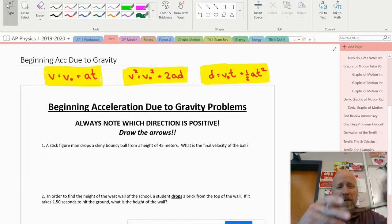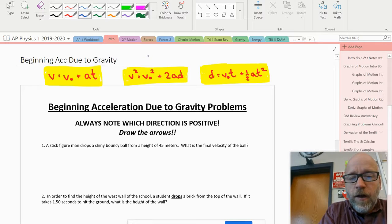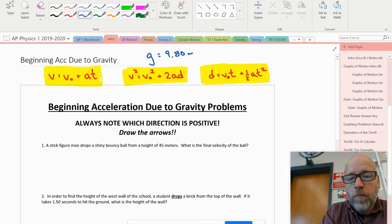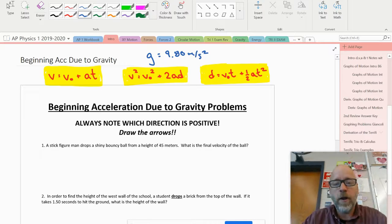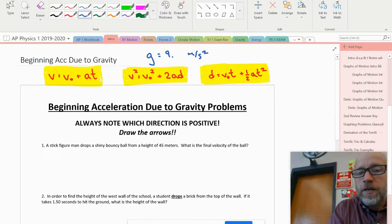Today what I'd like to do is try to utilize our terrific trio formulas and tie that together with our new concept that the acceleration due to gravity is going to be 9.80 meters per second squared in the absence of air resistance.